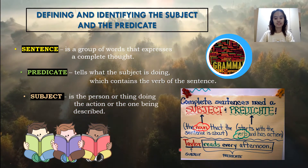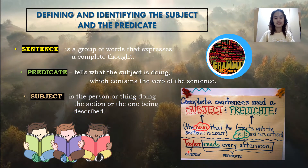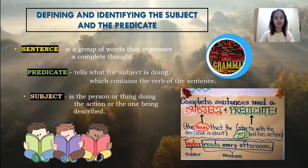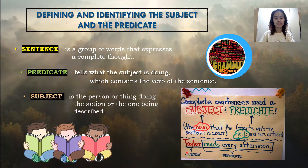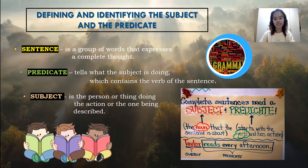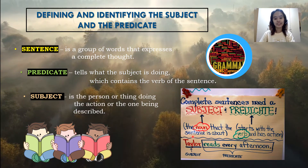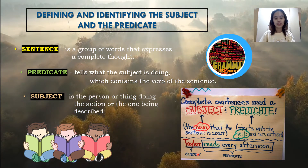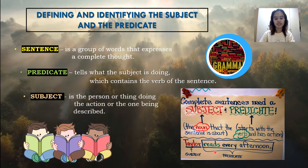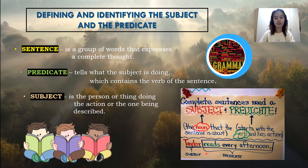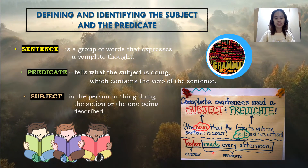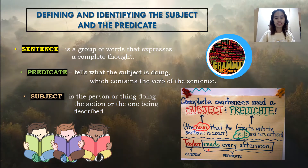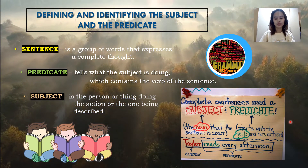For example, in this sentence: Taylor reads every afternoon. Taylor is the subject and it is a noun. A noun is a name of a person, place, or thing. The verb of the sentence is the word 'reads' because it denotes an action. And the complete predicate is 'reads every afternoon.'